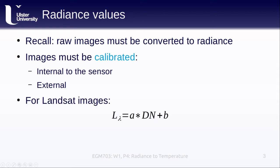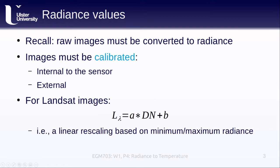For Landsat images, like we'll be using in this week's practical, the calibration is performed by the United States Geological Survey. All we have to do is take the rescaling values provided in the metadata and plug them into the equation shown here. In general, the calibration routine for most satellite images takes the form of a linear rescaling based on the minimum and maximum radiance recorded by the sensor. Most modern sensors now provide the calibration values for you so that you can rescale the values yourself.